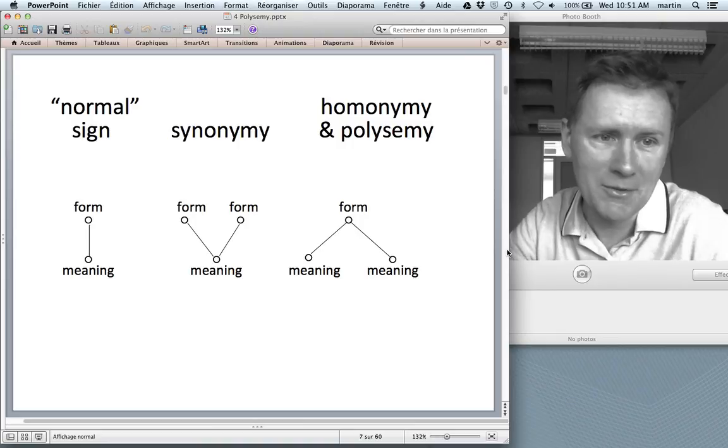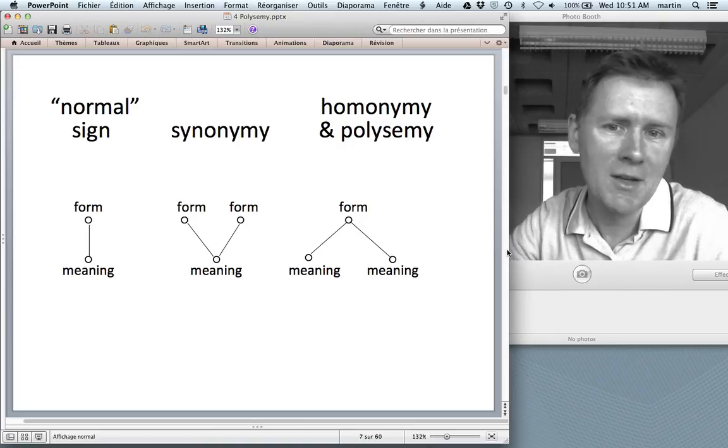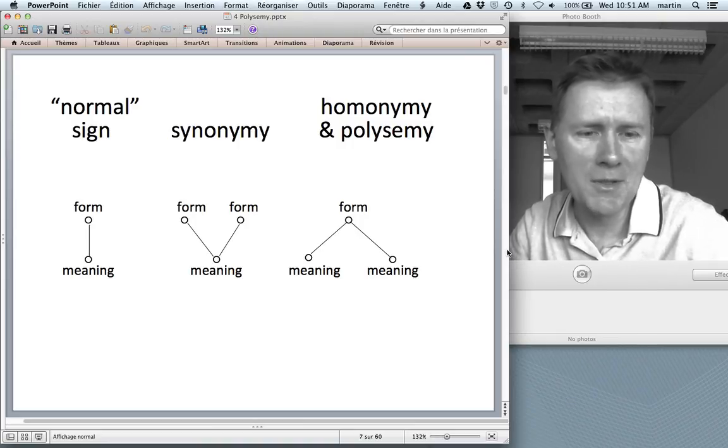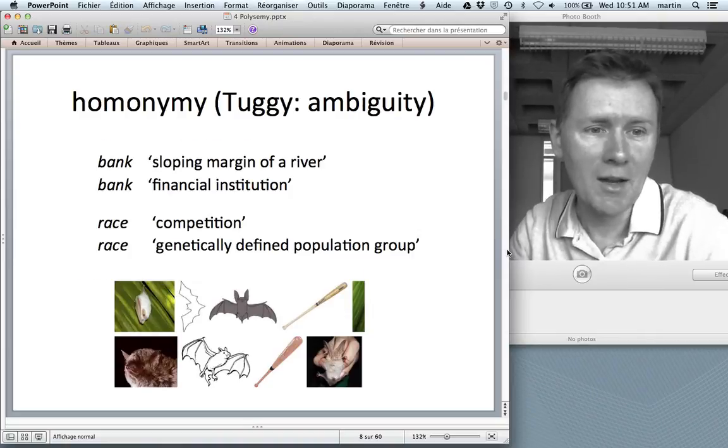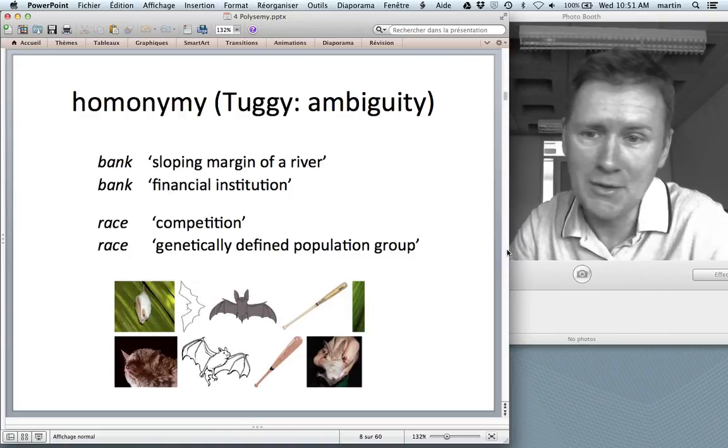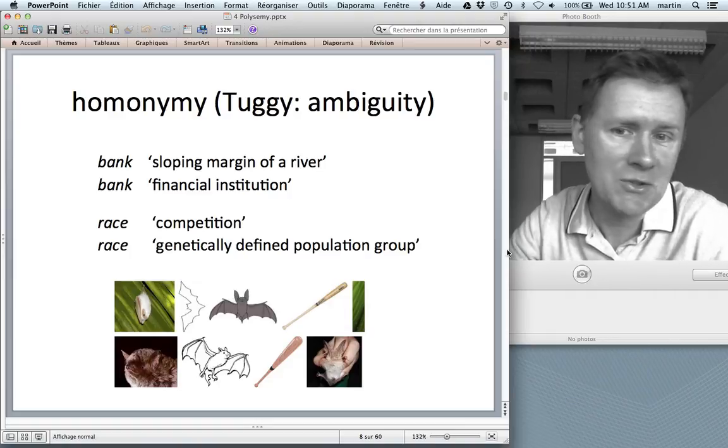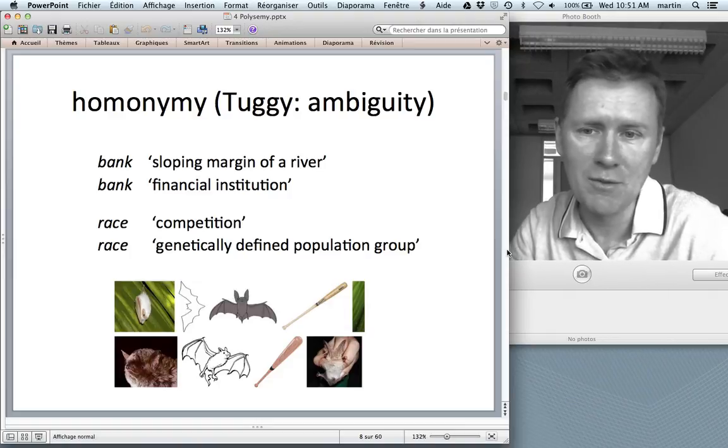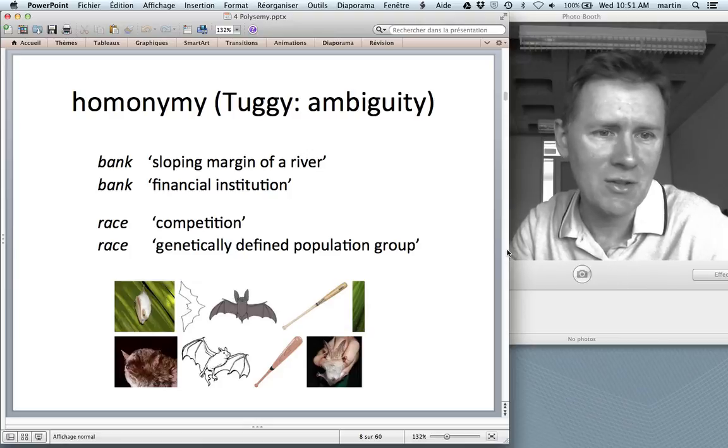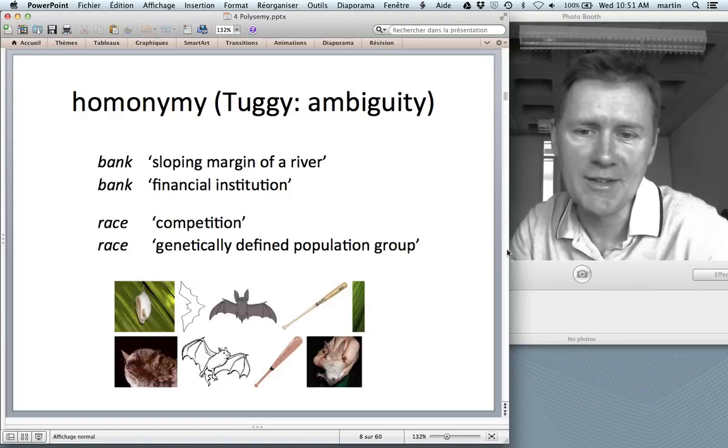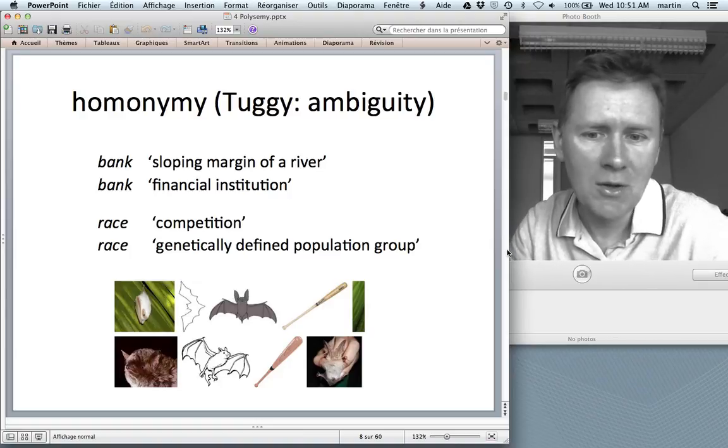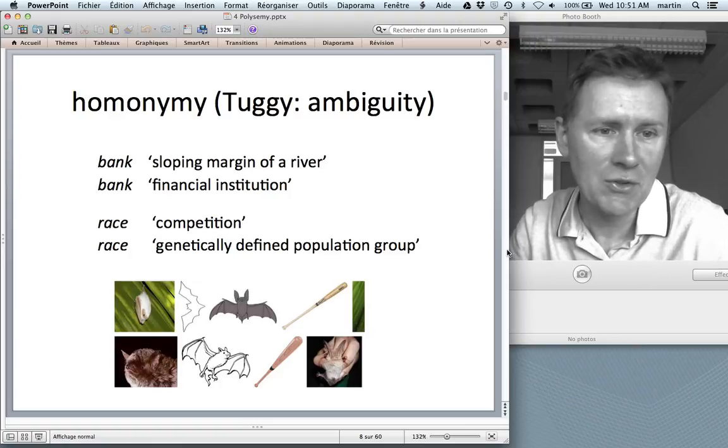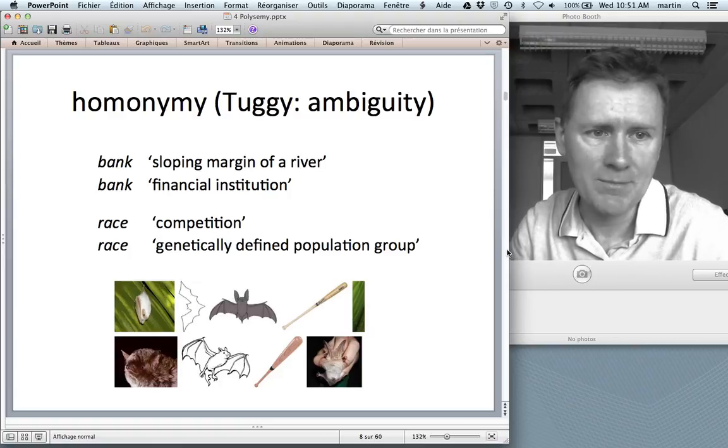But it's not only polysemy. You notice that I put homonymy and polysemy. Homonymy is also sometimes called ambiguity. And if you've taken your linguistics 101, you know what I'm talking about. Cases like bank, which can mean the sloping margin of a river or a financial institution. Or race can mean competition or a genetically defined population group.